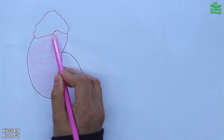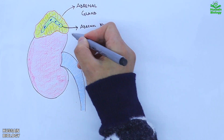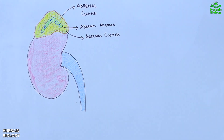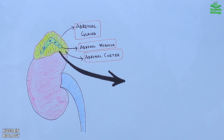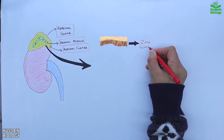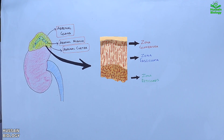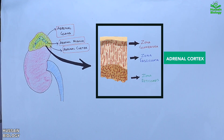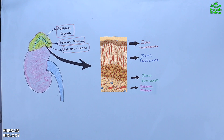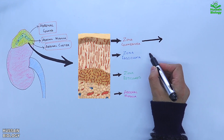In this diagram we have the kidney, and on top of the kidney we can see the adrenal gland. The innermost part is the adrenal medulla, and the outermost part shown in yellow is the adrenal cortex. Zooming into the adrenal cortex, we can see a connective tissue layer on the outside, then zona glomerulosa, followed by a large layer of zona fasciculata, and then zona reticularis. All three layers form the adrenal cortex, and the last layer is the adrenal medulla.